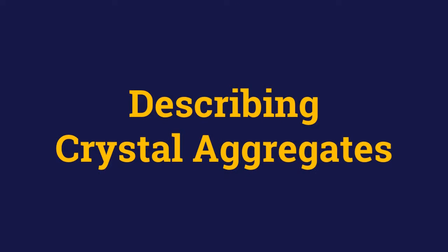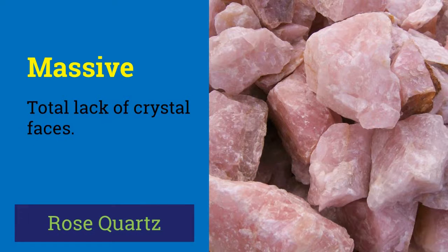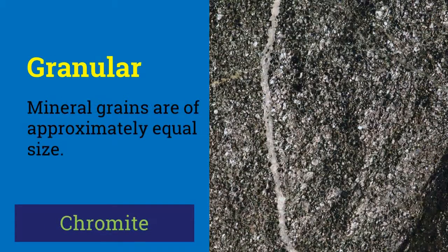Now let's proceed towards the terms that describe habits of whole crystal aggregates. When a mineral specimen totally lacks crystal faces, the mineral is said to have massive habit. This habit is often found in very fine-grained minerals like massive rosy quartz. Mineral grains that are of approximately equal size are said to have granular habit. This term is mainly applied to minerals whose grain size ranges from 2 to 10 mm.